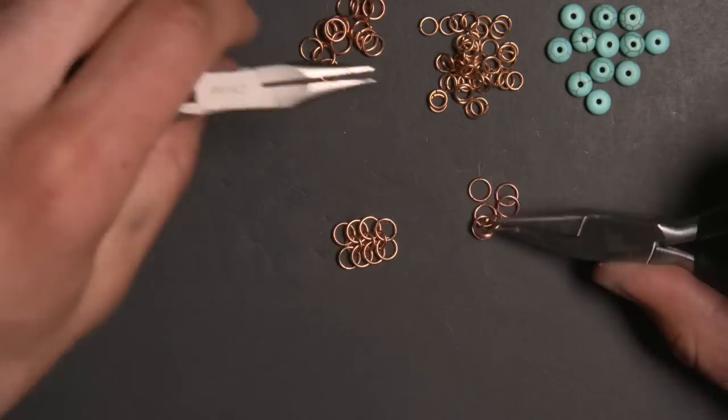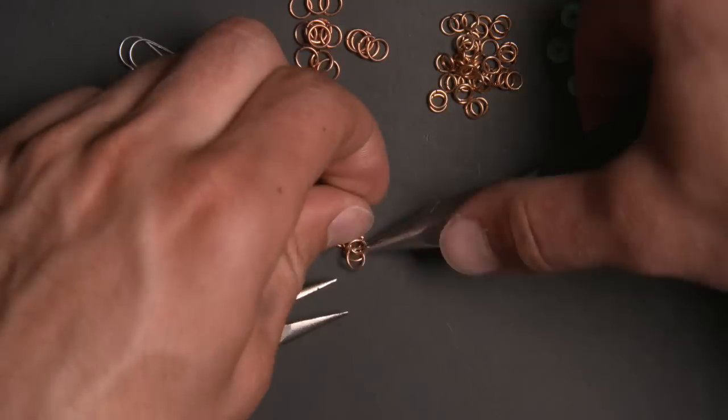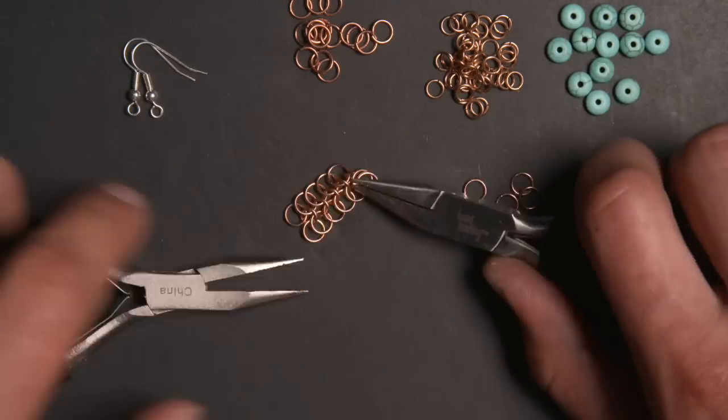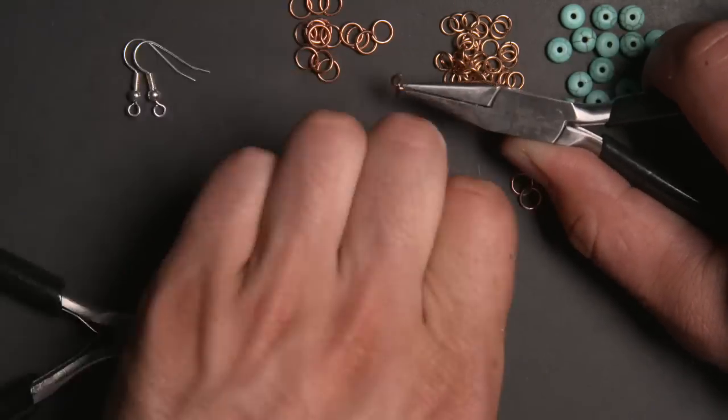You can see here now I've created a small section of European four-to-one and I'm just going to continue adding rings to that until I get to the length of eight units long that I'm looking for.